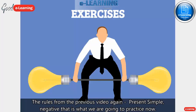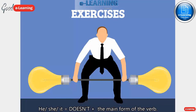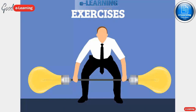The rules from the previous video — present simple negative. That is what we are going to practice now. He, she, it: doesn't plus the main form of the verb. I, we, they: don't plus the main form of the verb.